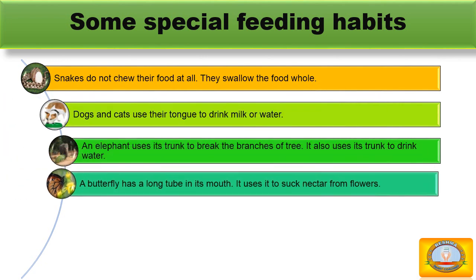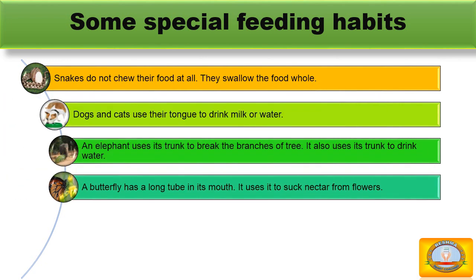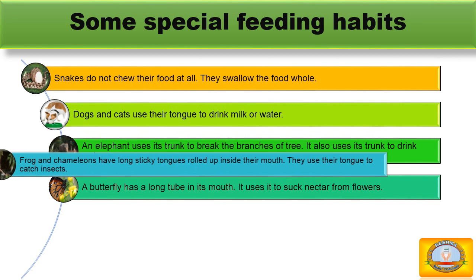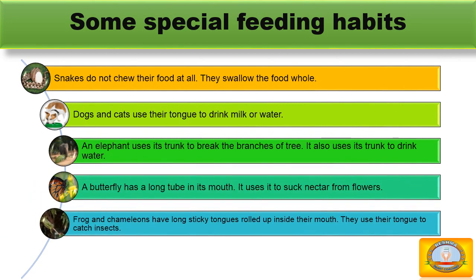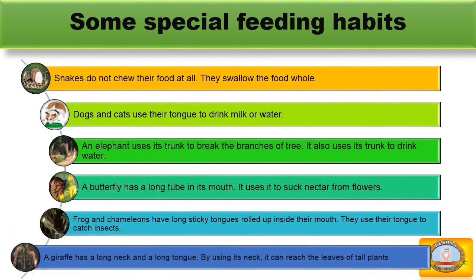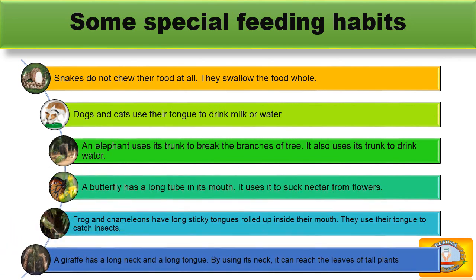A butterfly has a long tube in its mouth and uses it to suck nectar from flowers. Frogs and chameleons have a long sticky tongue rolled up inside their mouth; they use their tongue to catch insects. A giraffe has a long neck and a long tongue, and by using its neck it can reach the leaves of tall plants.